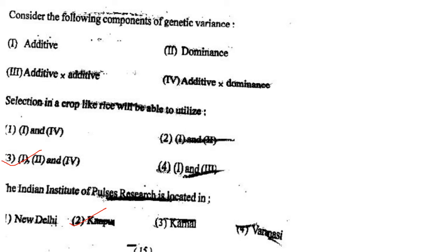Next one: Consider the following components of genetic variants — option 1, additive; option 2, dominance; option 3, additive x additive; option 4, additive x dominance. Selection in a crop like rice will be able to utilize options 1, 2 and 4. Answer is option 3: 1, 2 and 4.